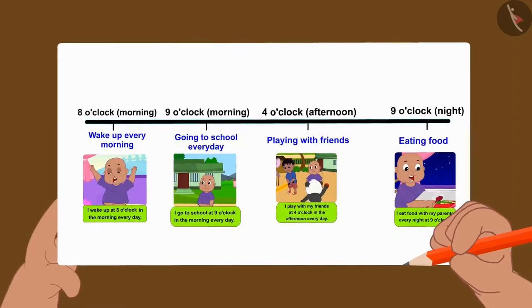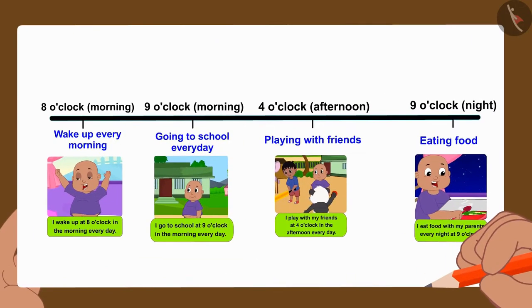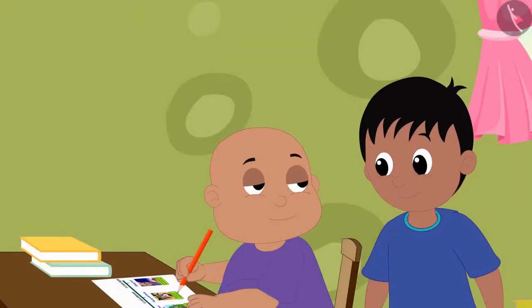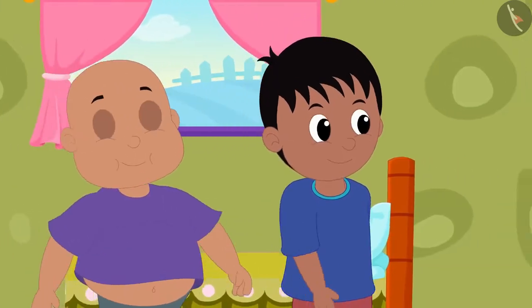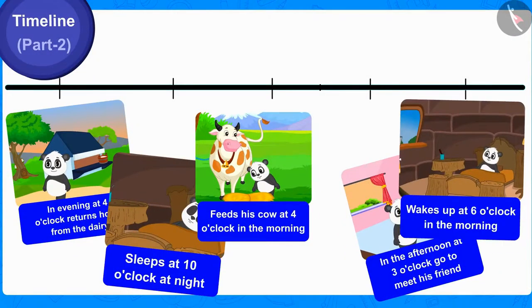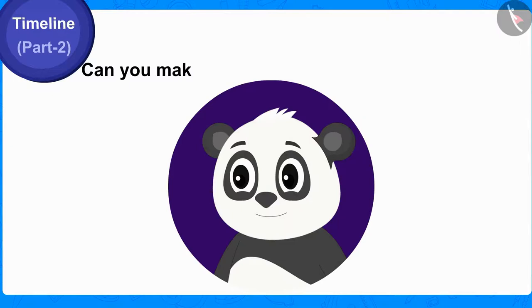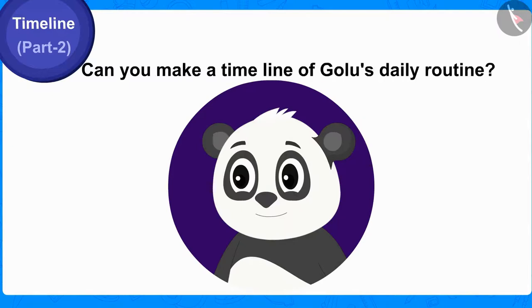Raju also completed the timeline in Bablu's diary by drawing beautiful pictures and writing the time in the correct order. Bablu thanked Raju for teaching him to write his daily routine using the timeline beautifully, and then both went to the play park. Children, here are some tasks and their times related to Golu's daily routine. Can you make a timeline of Golu's daily routine? You can find the answer by stopping the video.